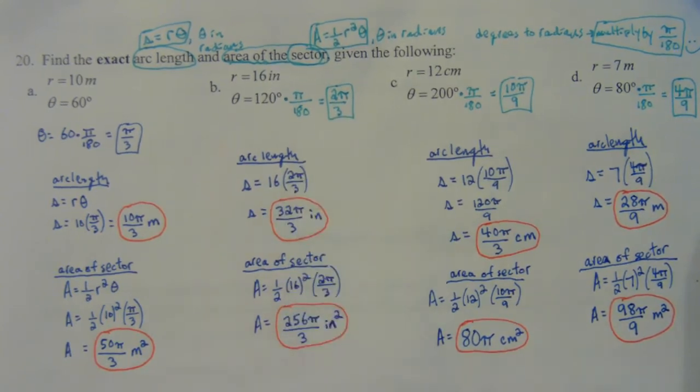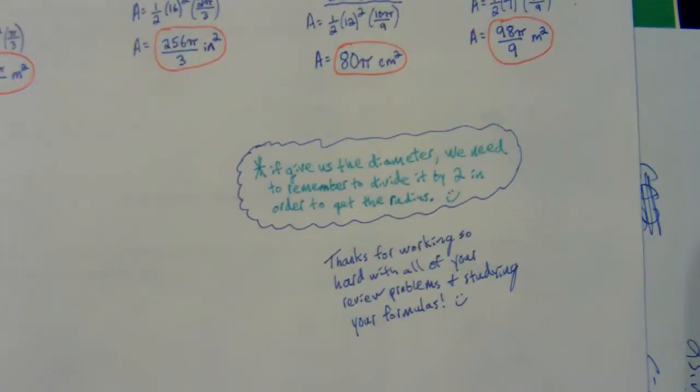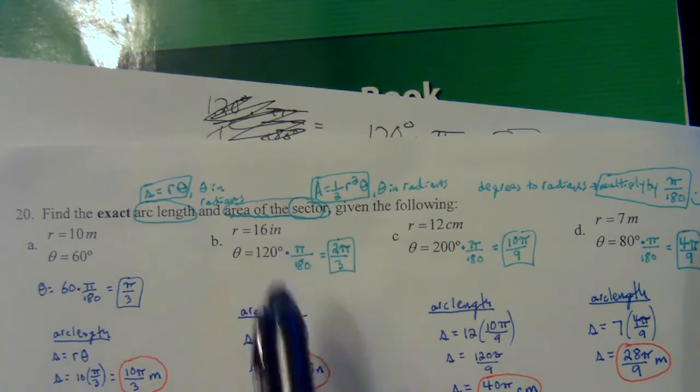And then I do have a note that says if they give us the diameter, then you gotta remember to divide that by two to get the radius. So all those above have the radius, but if I were to tell you that the diameter was 32,